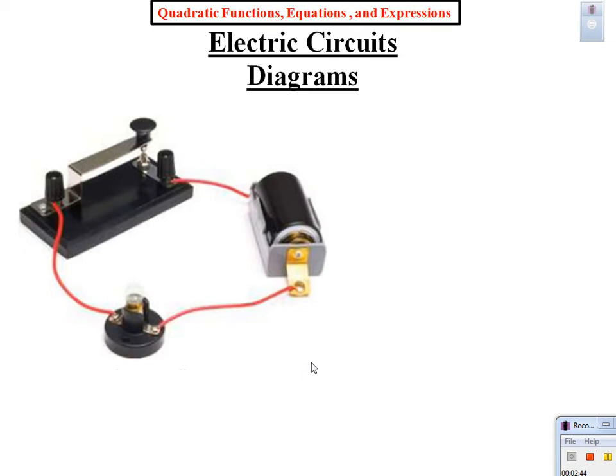Electric circuits. Today I'm going to talk about diagrams of electric circuits. Let's say I came in and said, students, I was at home and I came up with this device — it's very cool, and it's an electric circuit. Let me show you the device. Here's the battery right here, here's the light bulb. The positive goes to one side of the light bulb, the negative of the battery goes to the other side. But in between, there's a switch.